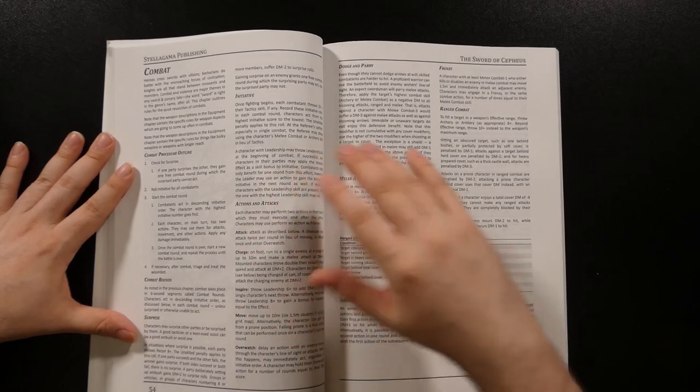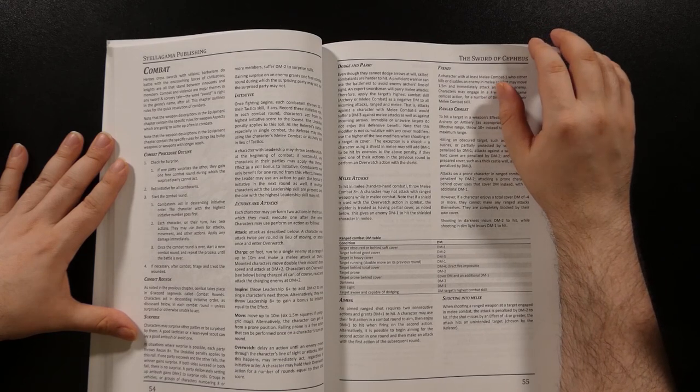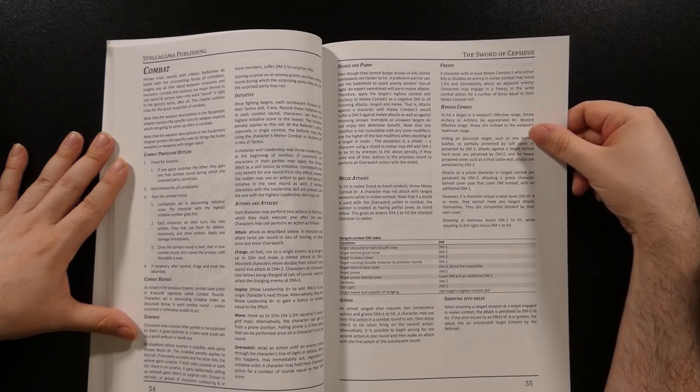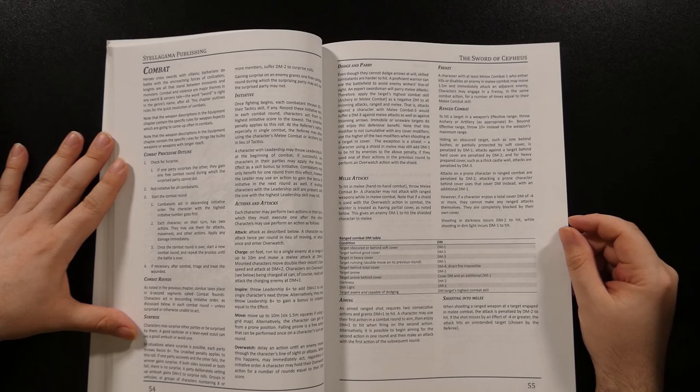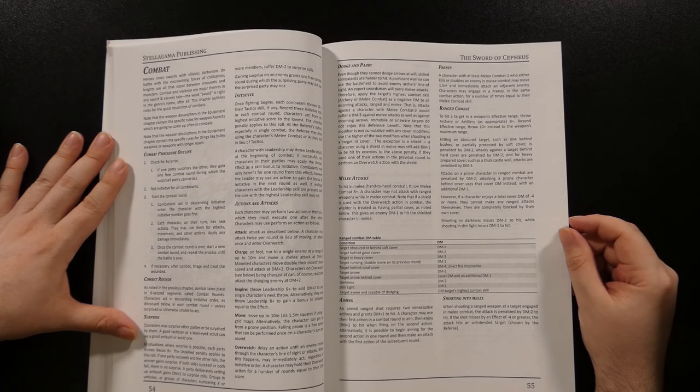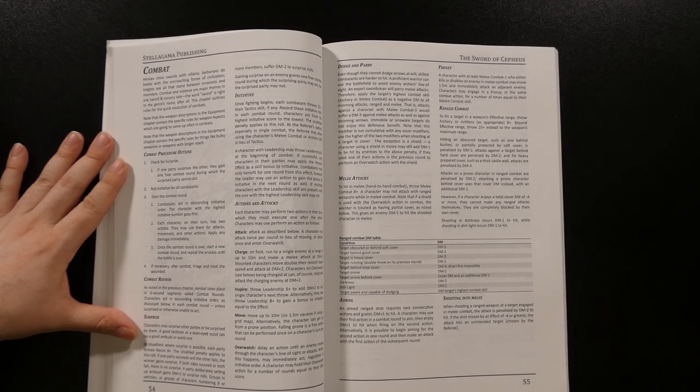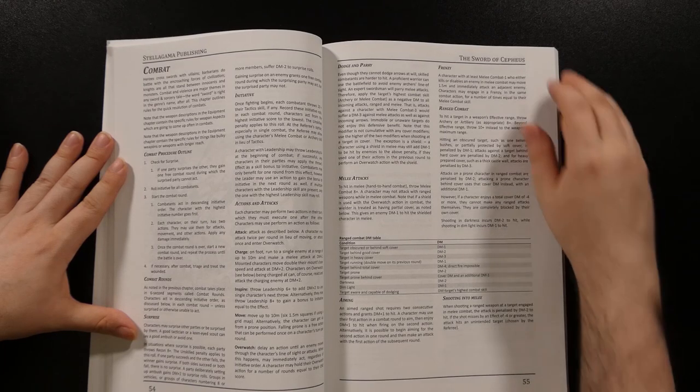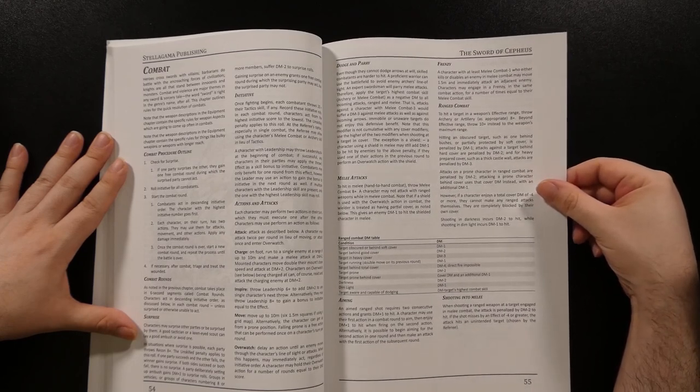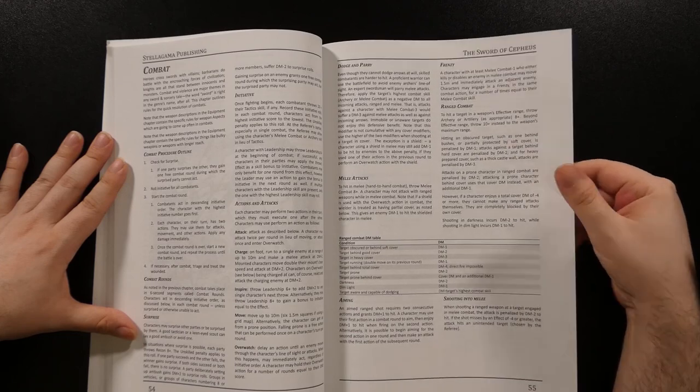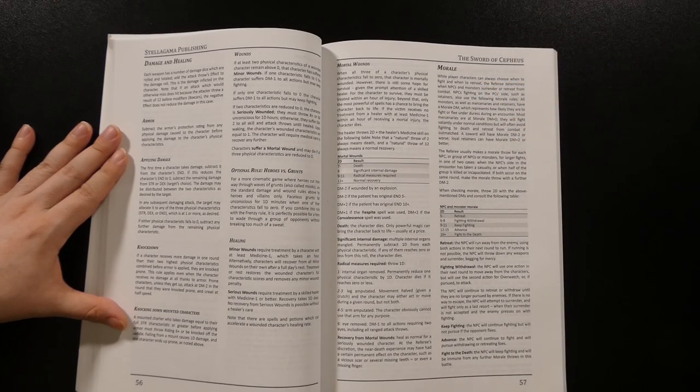The chapter on combat is very much a product of the Cepheus Engine background, offering rules of surprise, initiative, and various sorts of attacks. However, the higher prevalence of hand-to-hand combat, considering the lack of more modern weaponry, puts a premium on these rules. As usual, characters can execute two actions on their turn from a basic menu, and melee attacks are a basic melee role, although there are guidelines for dodging and parrying. Similarly, archery requires an archery role to hit, with modifiers based on the target's current position. There's a built-in frenzy rule that allows for additional melee attacks once a character drops a target, again stressing the emphasis on melee that tends to dominate the sword and sorcery genre.